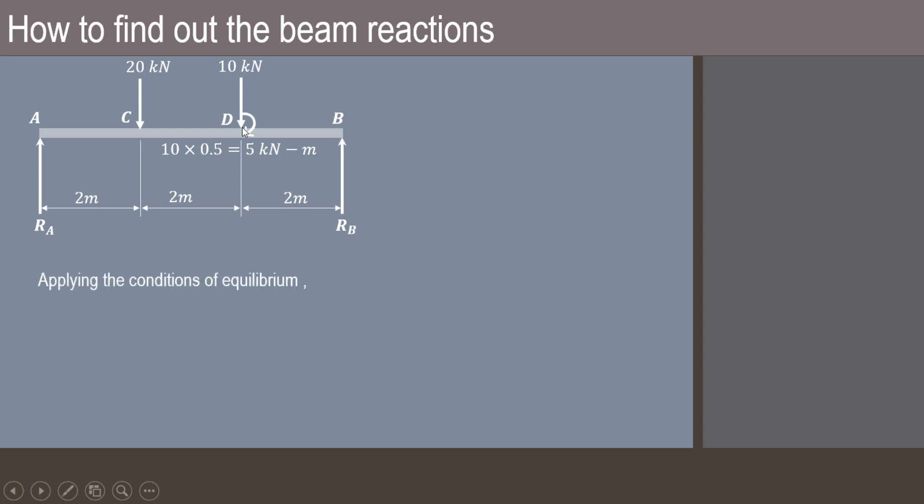Now we apply the conditions of equilibrium. The first condition of equilibrium is summation of forces in y direction is equal to 0. Upward force we have considered as positive whereas downward forces are considered as negative. So RA and RB are the reactions at supports A and B acting in the upward direction. 20 kN and 10 kN loads are acting in the downward direction. So we can say that RA + RB - 30 = 0.